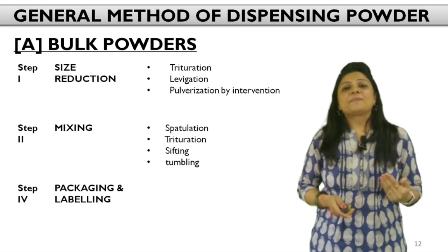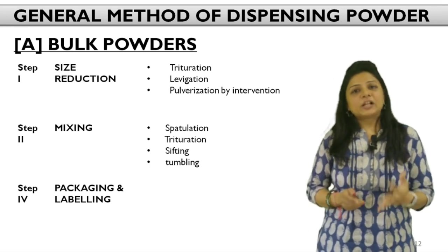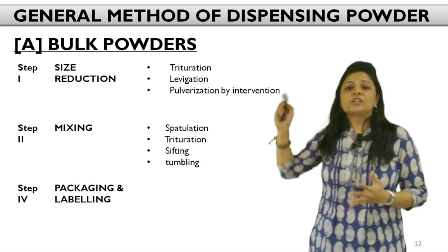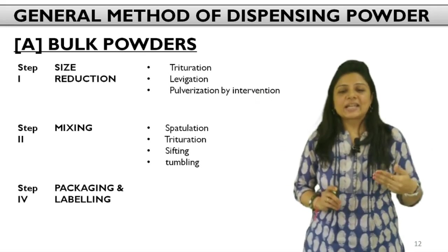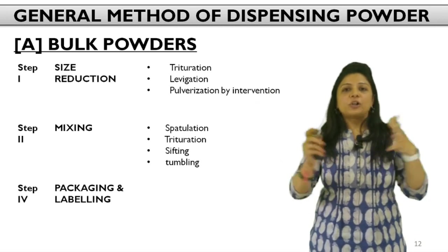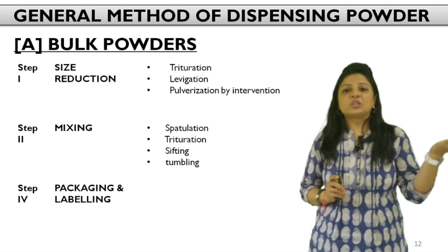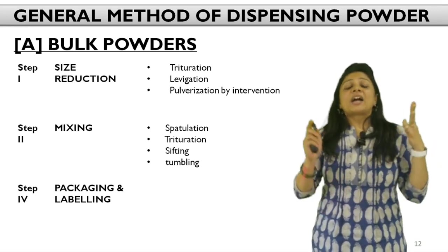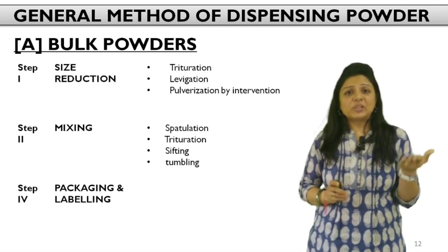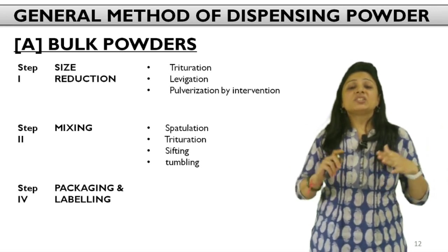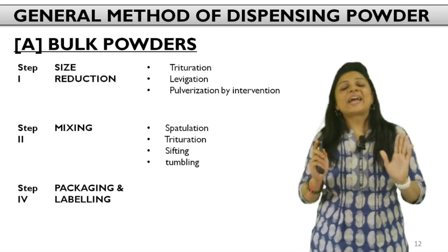What are the general steps for dispensing any type of powder? For bulk powder, the first step is size reduction — reduce and make uniform particle size of all ingredients by lavigation, trituration, or pulverization. After size reduction, mix all ingredients by a suitable mixing technique such as spatulation, trituration, sifting together, or tumbling. The third step is packaging and labeling.